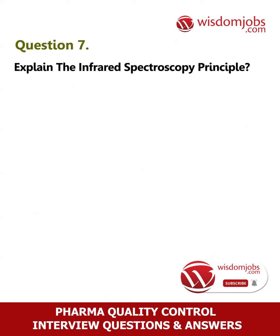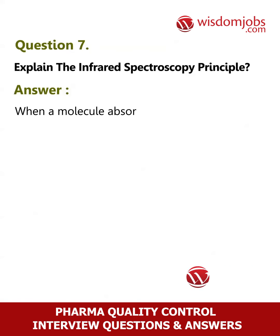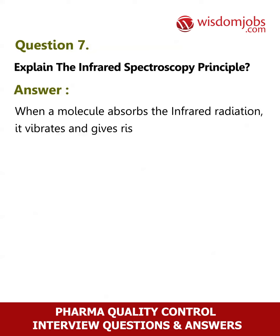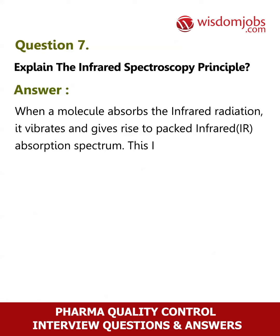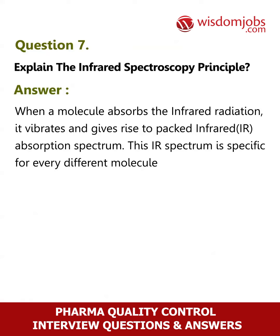Question 7: Explain the infrared spectroscopy principle. Answer: When a molecule absorbs infrared radiation, it vibrates and gives rise to an infrared (IR) absorption spectrum. This IR spectrum is specific for every different molecule absorbing the IR radiation, making it useful for identification.